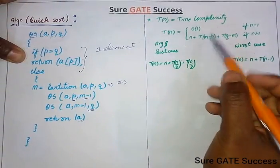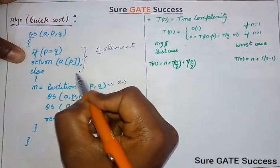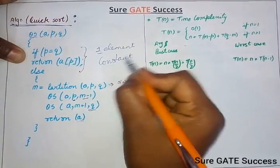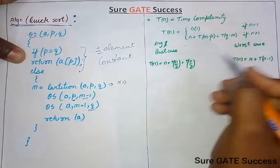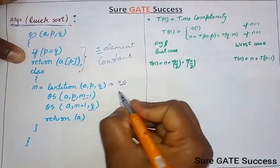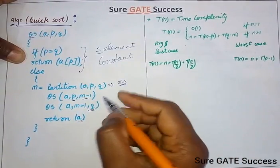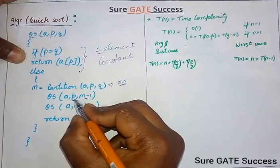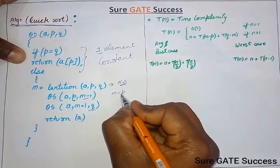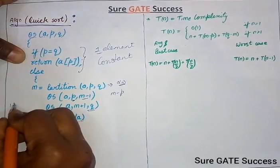Let's understand the time complexity. For a small problem where N equals 1, it takes constant time, which is order of 1. For N greater than 1, the partition takes order of N. Then quicksort is called on the left subarray from P to M minus 1, which has M minus P elements.